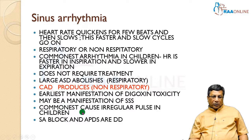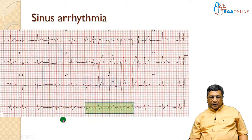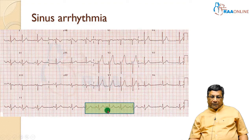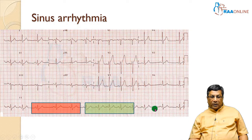Sinus arrhythmia is the most common arrhythmia in children and the most common cause of irregular pulse in children. Here I am showing you an ECG of sinus arrhythmia. During one period of this recording, the patient has got a heart rate of almost 100 per minute. During another phase, the patient has got a heart rate of almost 50 to 60 per minute. Spontaneously, you can see that the heart rate is quickening and slowing down.